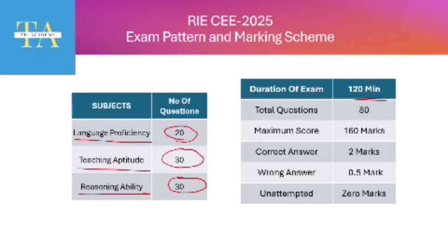The total number of questions is 80, with a maximum score of 160. Each correct answer carries two marks. There is negative marking: minus 0.5 for a wrong answer. Unattempted questions receive zero marks.